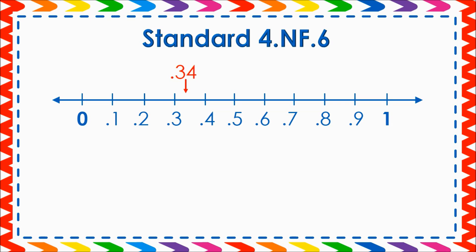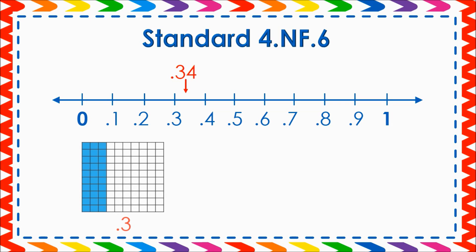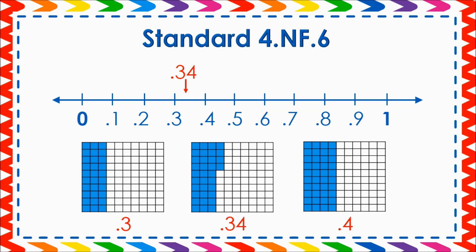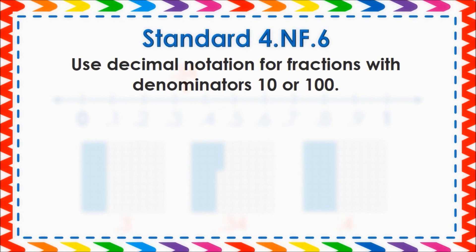Here we see three-tenths on a ten-by-ten grid and four-tenths on a ten-by-ten grid. Using a third ten-by-ten grid, students can see that thirty-four hundredths is a bit more than three-tenths and less than four-tenths. Once students have a basic understanding of decimals, they can begin to convert between fractions and decimals. Be sure that the fractions students work with have denominators of ten or one hundred.